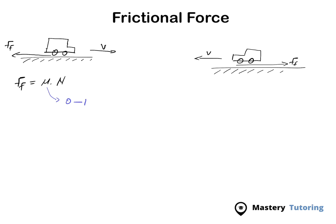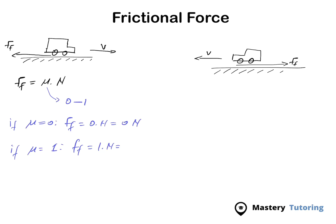If mu equals 0, frictional force is going to be 0 times N, which equals 0 N — there is no friction between the contact surface and the object. If mu equals 1, frictional force is 1 times N, which equals just N. This means frictional force is at its maximum, the highest value it can ever be. Remember, the unit for frictional force is N.